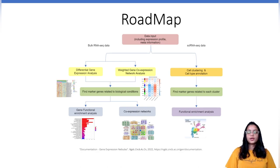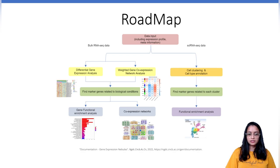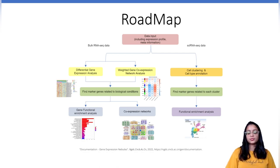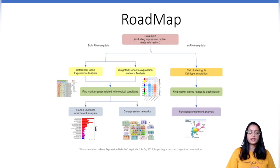For single-cell RNA-seq data, once we have the feature-barcode matrix, we perform pre-processing steps like normalizing, scaling, and running dimensionality reduction. Following that, we can perform cell clustering and annotate the cell types present in our data. Once cell types are annotated, we can compare between certain cell types and identify marker genes. These marker genes can be used for functional enrichment analysis or to identify which pathways are enriching which cluster of cells. We can also perform pseudotime or trajectory analysis to study changes in gene expression across different developmental stages of the cell.